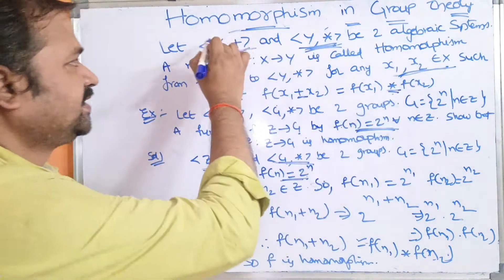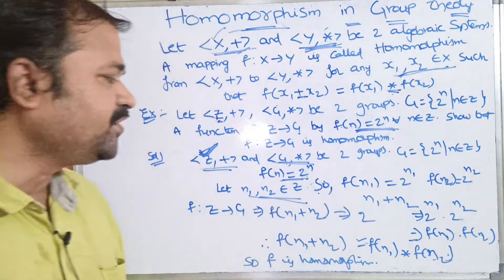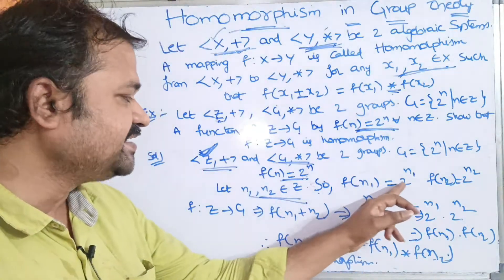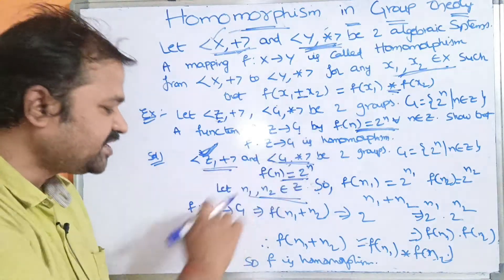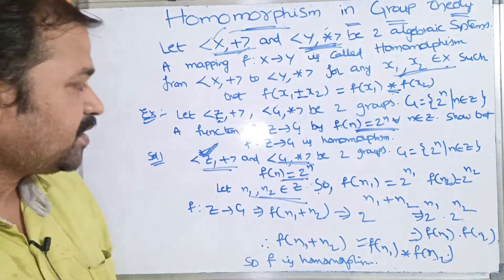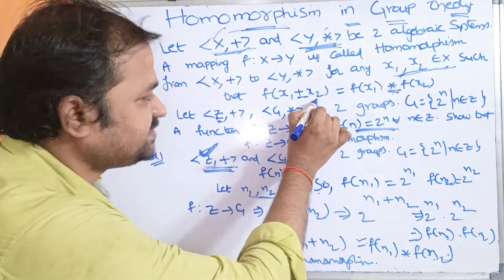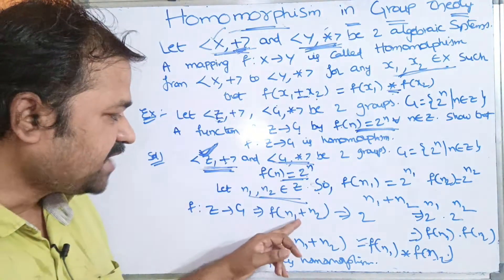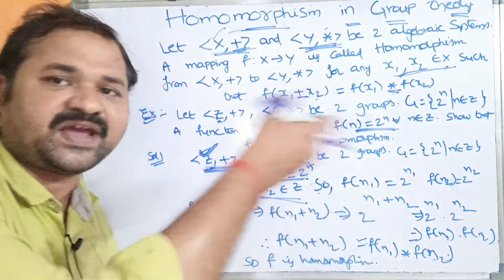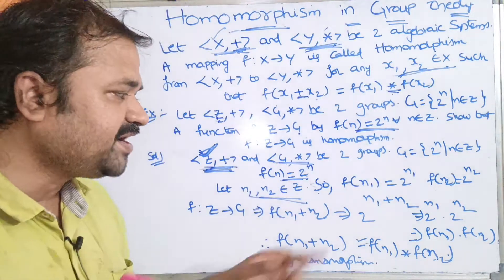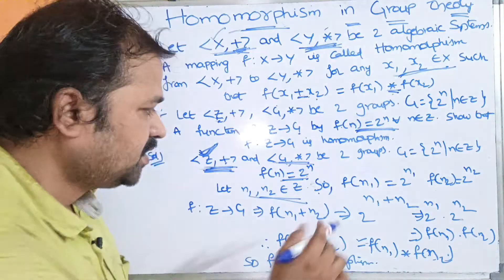We know f(n) = 2ⁿ, so f(n₁) = 2^n₁ and f(n₂) = 2^n₂. Since group one's binary operation is +, we compute f(n₁ + n₂). Substituting n₁ + n₂ in place of n gives f(n₁ + n₂) = 2^(n₁ + n₂).